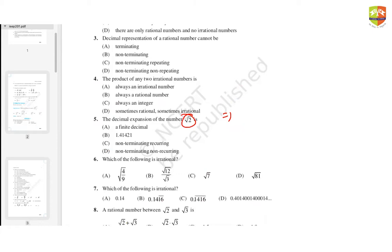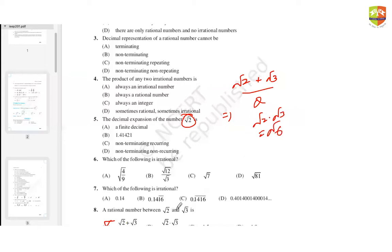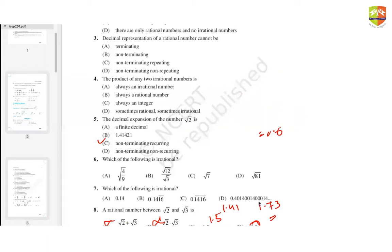Taking the example of root two and root three to find a rational number in between: the addition of two irrational numbers is irrational, and root two into root three is root six, also irrational. Since root two is nearly 1.41 and root three is 1.73, the number 1.8 is beyond that limit. So the rational number in between is 1.5.